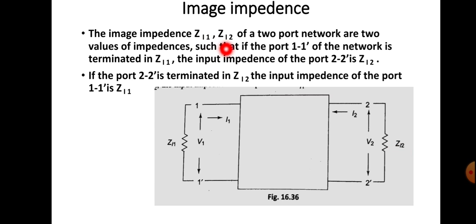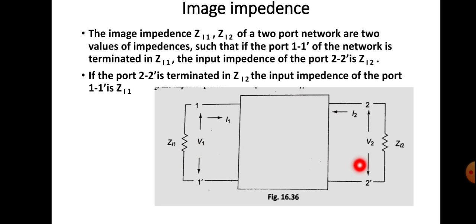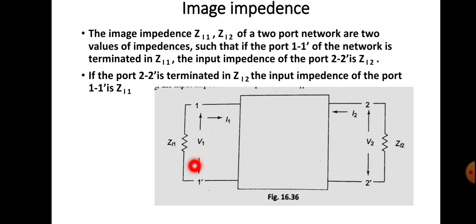The image impedances ZI1 and ZI2 of a two-port network are two values of impedance such that if port 1, 1' is terminated in ZI1, the input impedance of port 2, 2' is ZI2. Similarly, if port 2, 2' is terminated in ZI2, then the input impedance of port 1, 1' is ZI1. That is, if we terminate the input port with ZI1, the corresponding output impedance is called the image impedance of that input impedance, and vice versa.